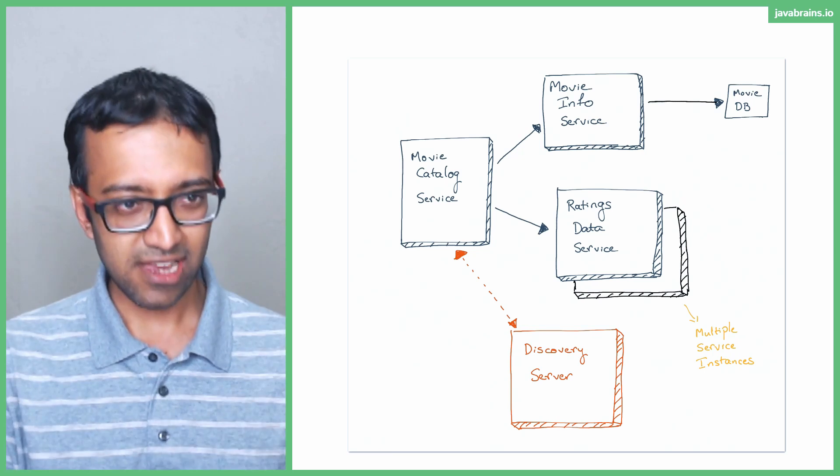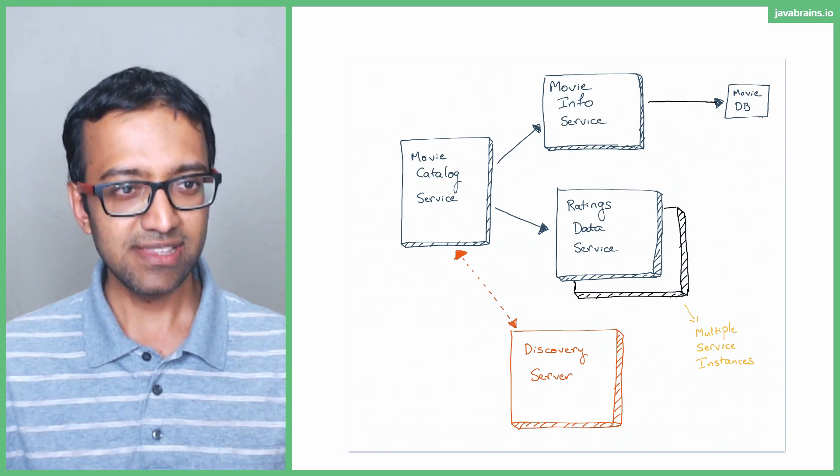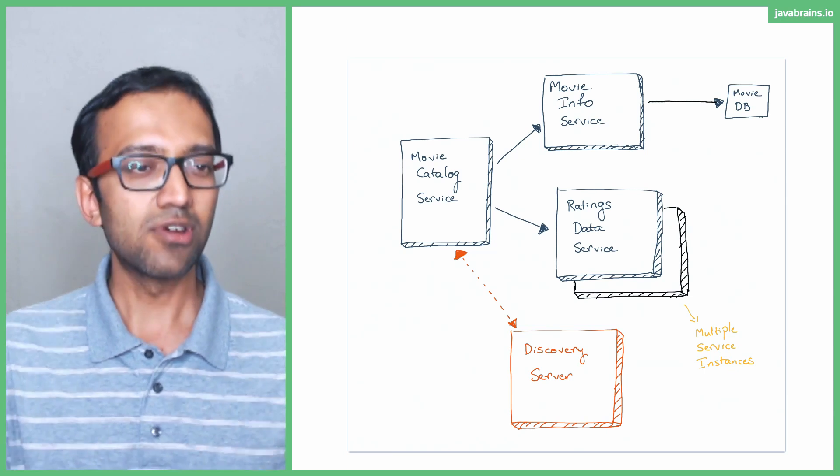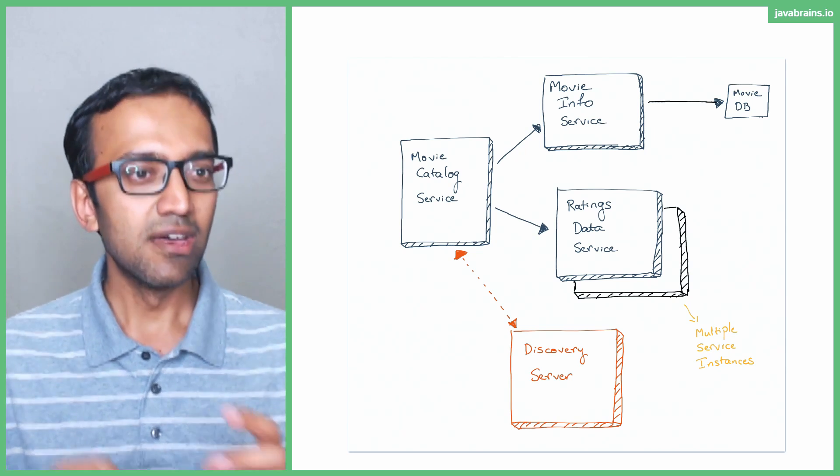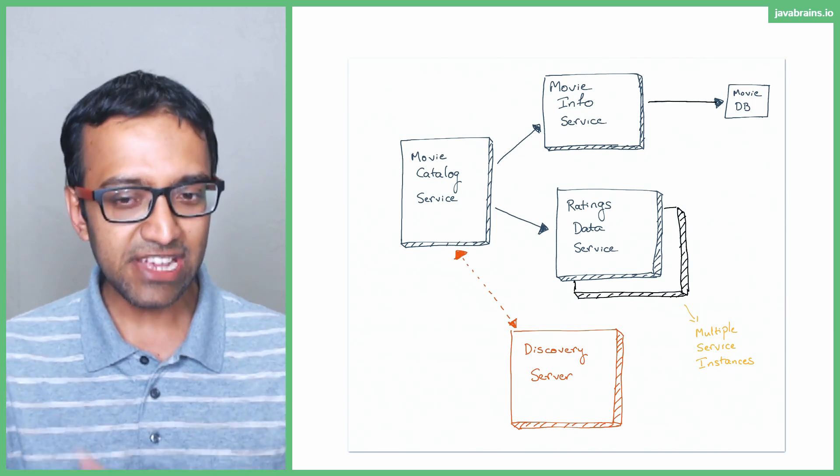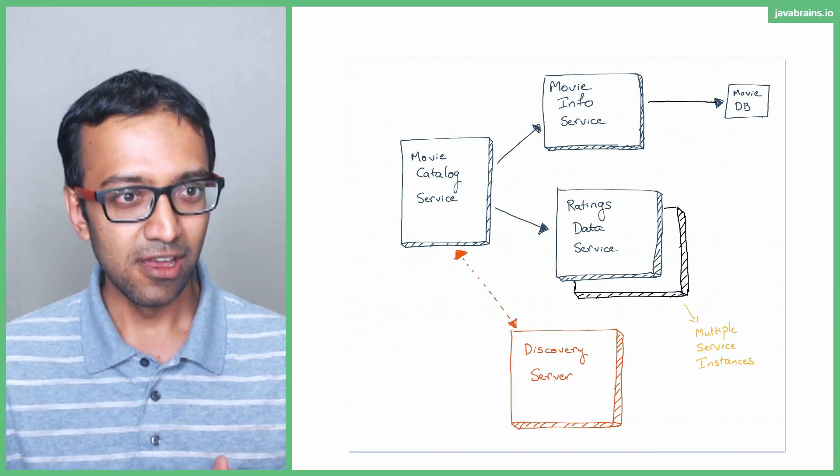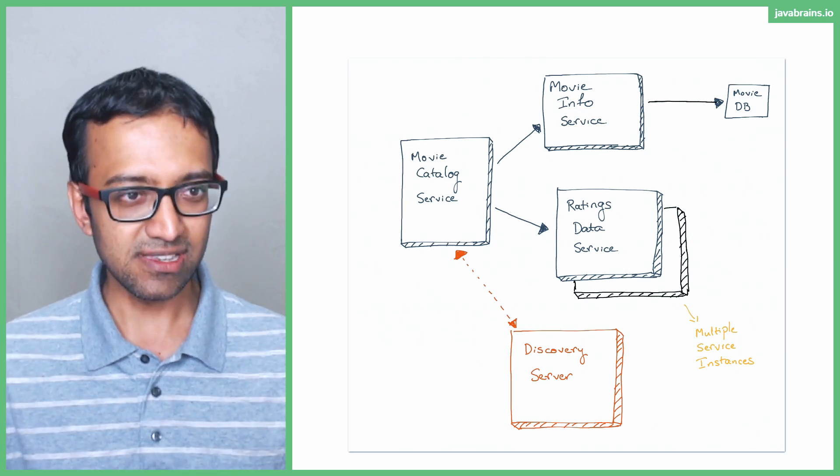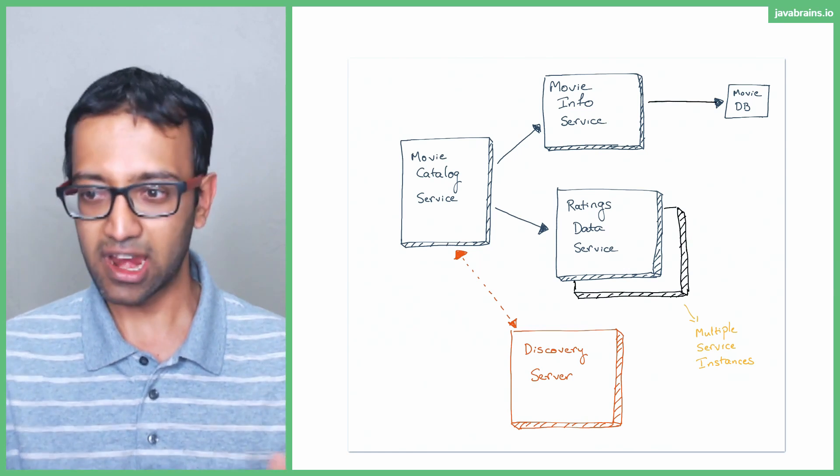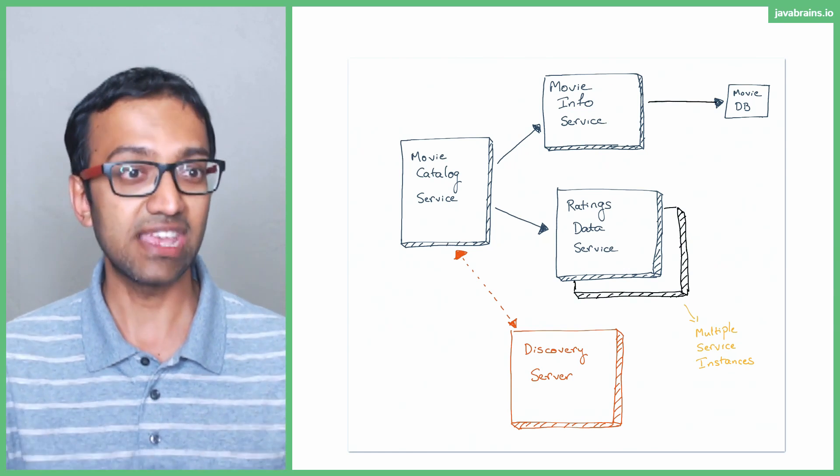The clients, there's client side load balancing with the technology called Ribbon. And what it does is it does a round robin. If it sees more than one instance of a microservice, it says okay, I called this guy last time, I'm going to call this guy next time. So it's kind of like each of these clients has logic in it to handle equal distribution of the load.